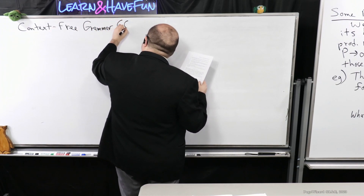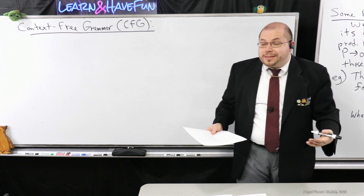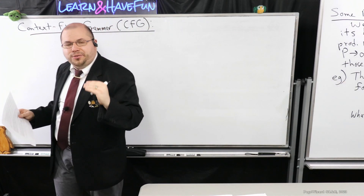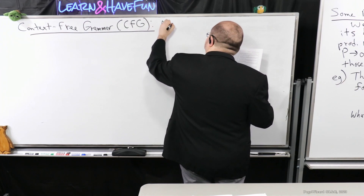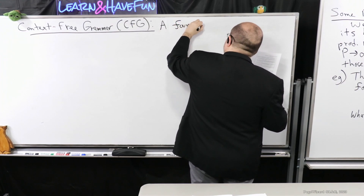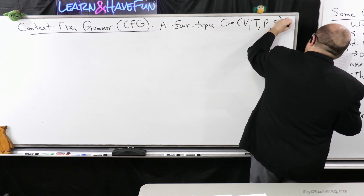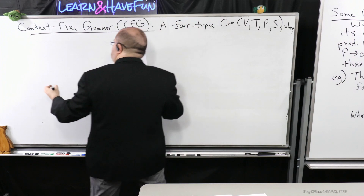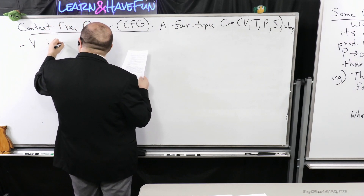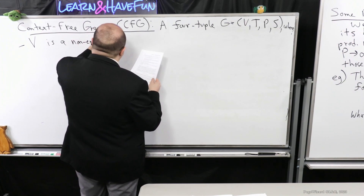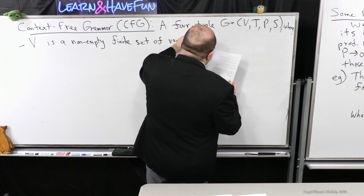Now we can define what a context-free grammar is, now that we have a good feel for how grammars work and what context-free means, along with some of the main terminology we're going to need. I like to do it this way so that we have a little bit of fun playing around with the concept before we get formal, because we've never talked about what a grammar is. A context-free grammar is a 4-tuple (V, T, P, S).